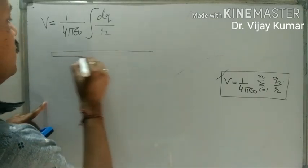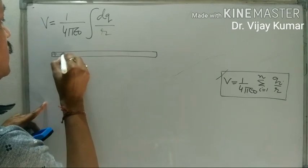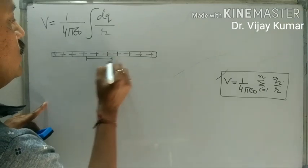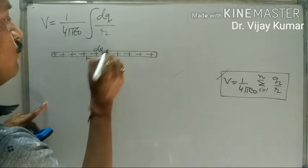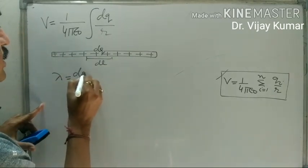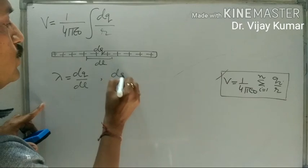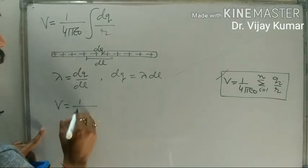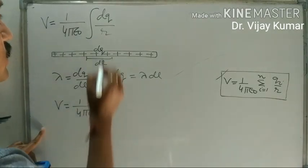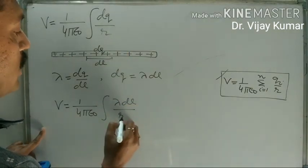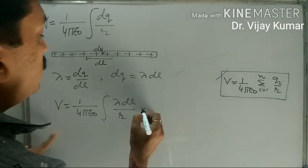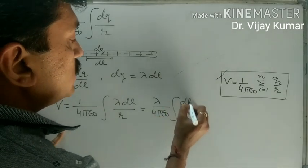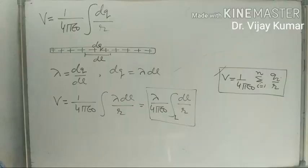Suppose there is a case of uniform linear charge distribution. We take a small length DL, and the charge on DL is dQ. We know that linear charge density lambda equals dQ upon DL, so dQ equals lambda DL. This gives V equal to 1 upon 4 pi epsilon naught, integration of lambda DL upon R — which becomes lambda upon 4 pi epsilon naught, integration of DL upon R.